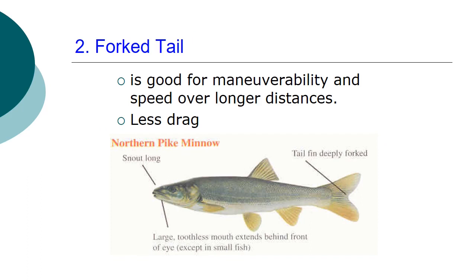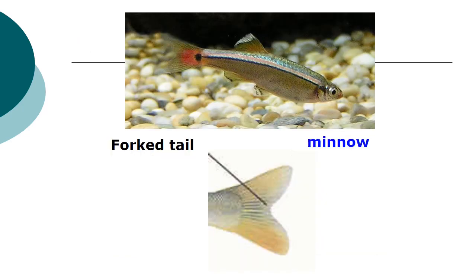The forked tail is good for maneuverability and speed over longer distances with less drag. The northern pike and minnow have a deeply forked tail fin. The minnow has a long snout and a large toothless mouth that extends behind the front of the eye, except in small fishes. As you can see in this picture, minnow fish have a forked tail.